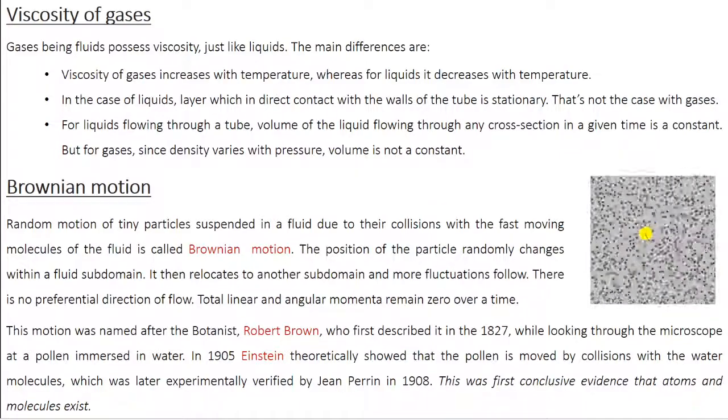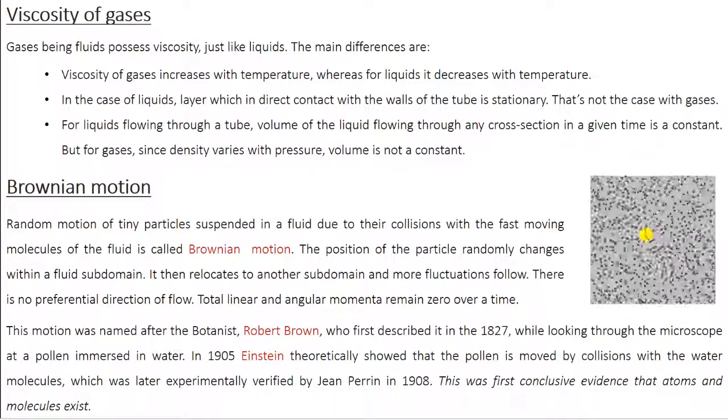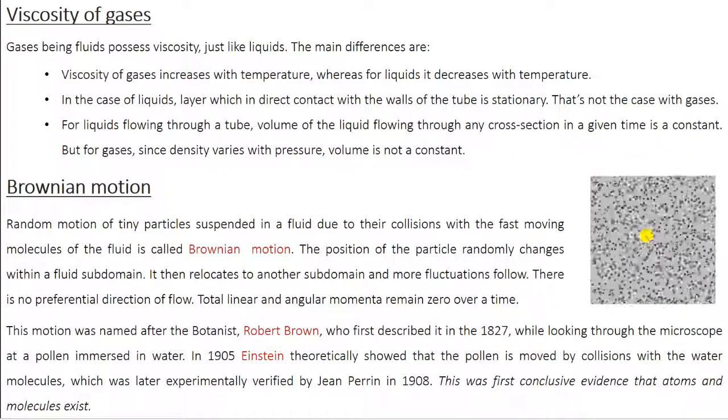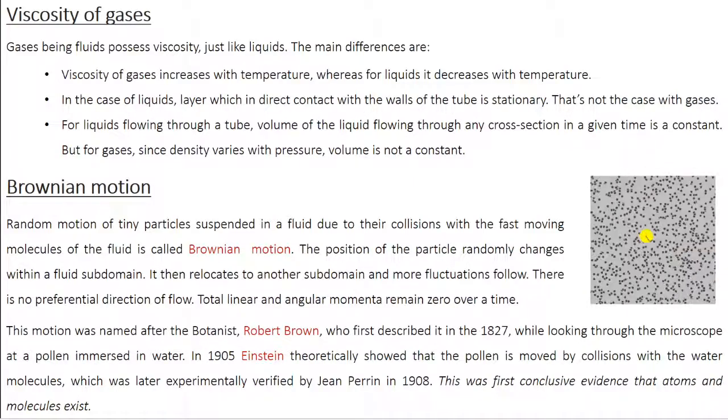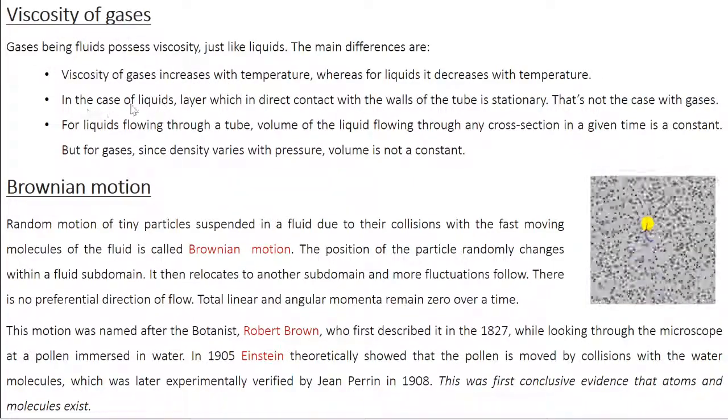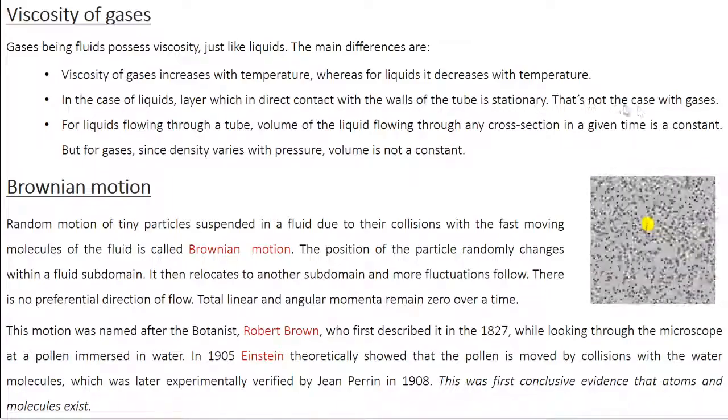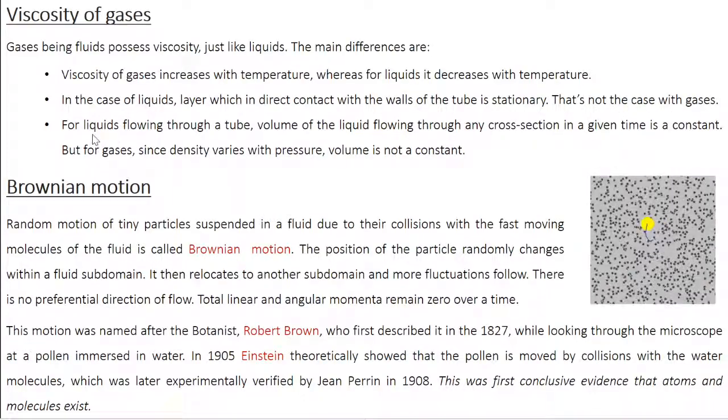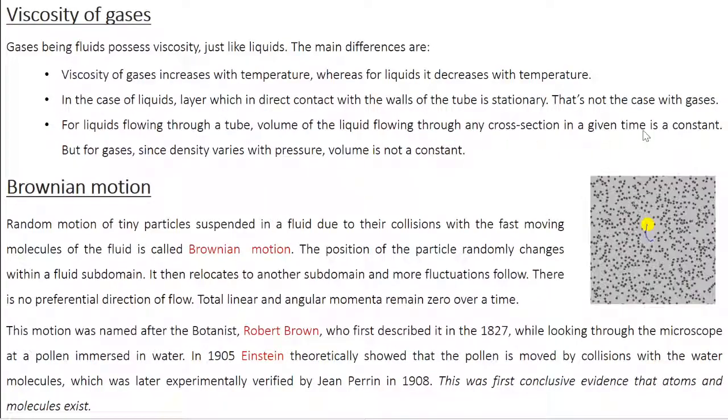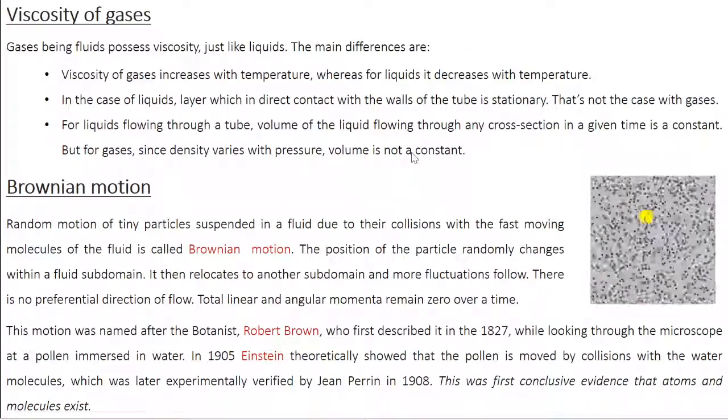We are not going to get into the details of the equation, because some of these equations are based on pure experimental observations. There is no strong theory behind this. Nevertheless, just get the idea that the temperature dependence is completely different between liquids and gases. In the case of liquids, the layer in direct contact with the walls of a tube is stationary, but that is not the case with gases. For liquids flowing through a tube, volume flowing through any cross-section in a given time is constant, but for gases, density varies with pressure, so volume is not constant.